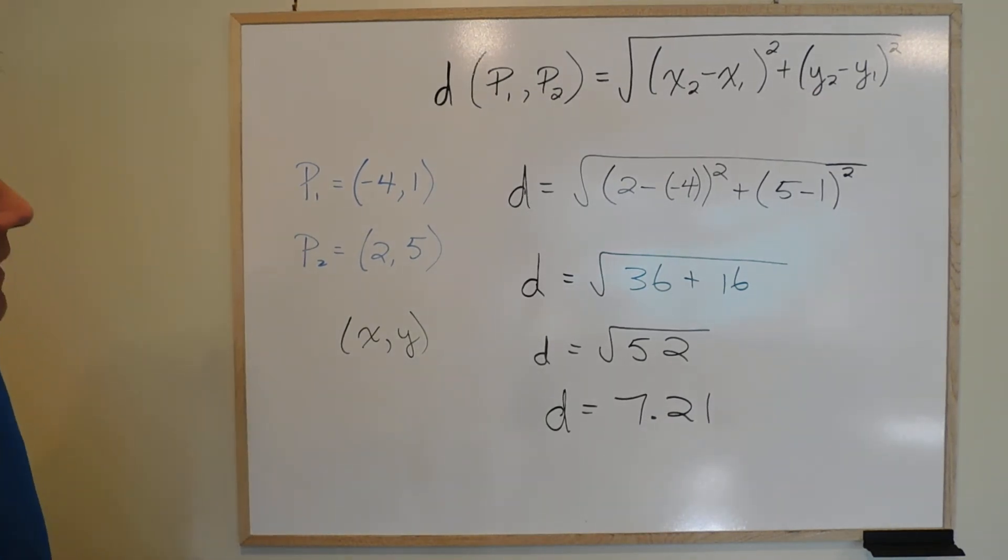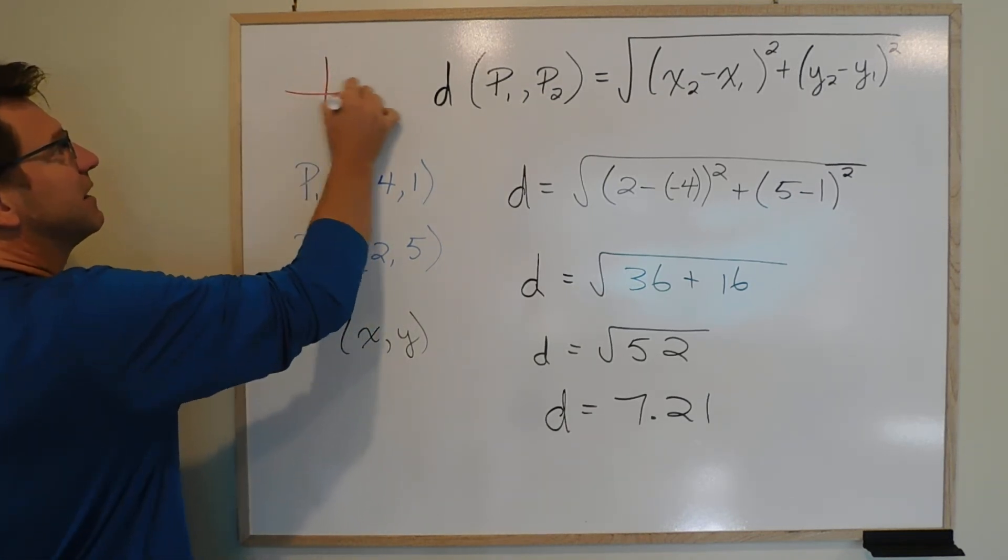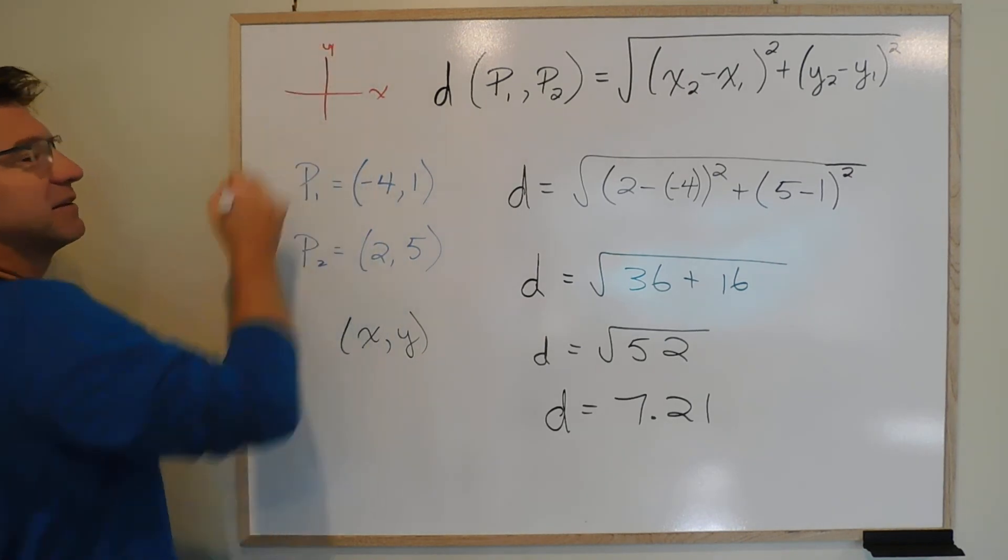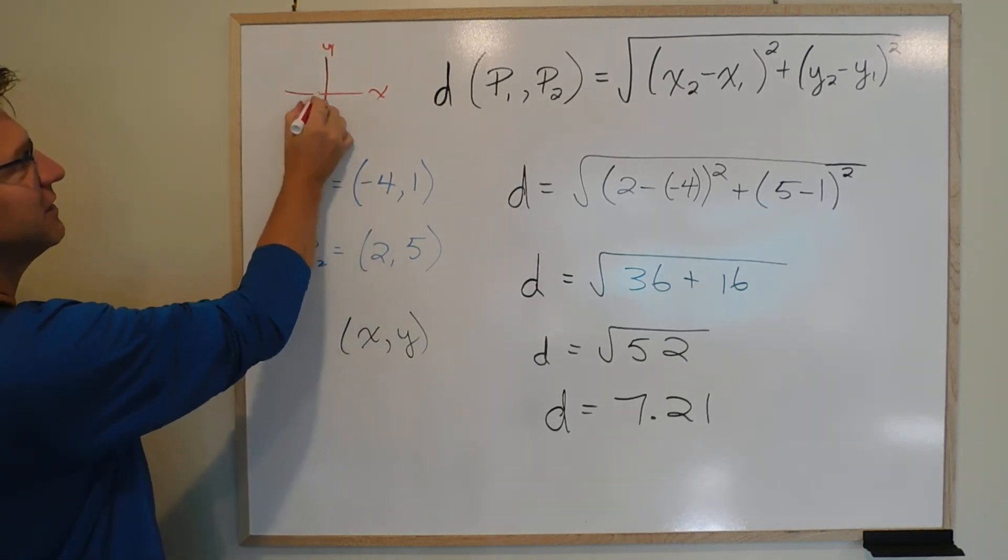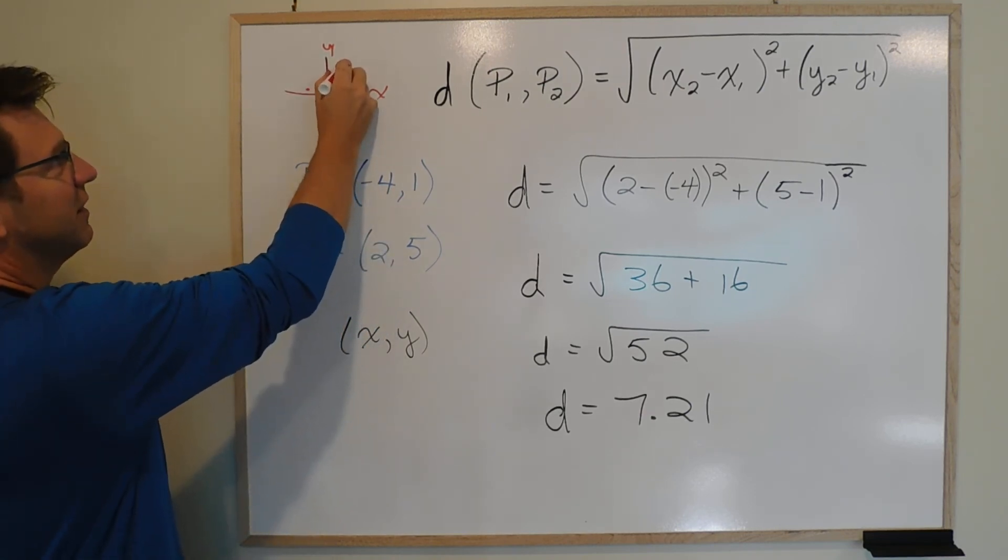Just quick, if I was to plot these points, let's see where they are. Just to see if this makes any sense. Super fast. Negative 4 is this way and 1 is kind of up here. Negative 4 and 1. 2 and 5 is over here.